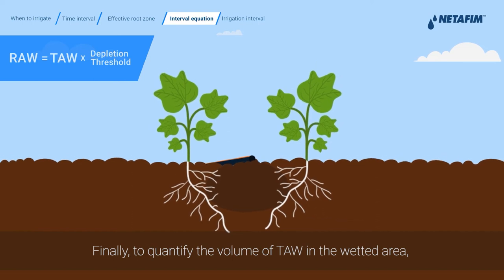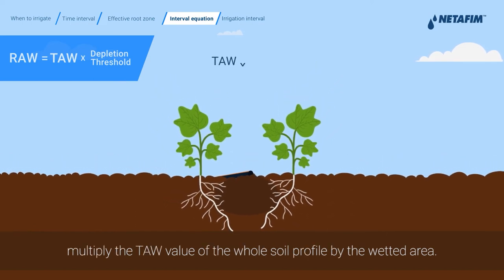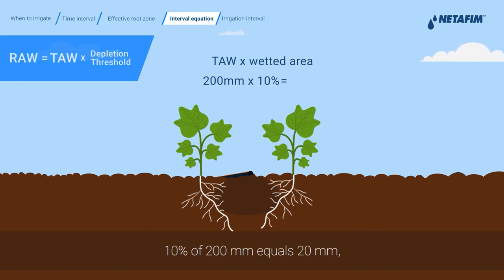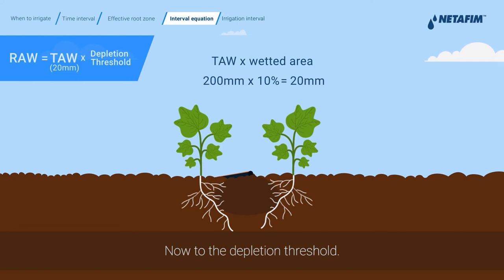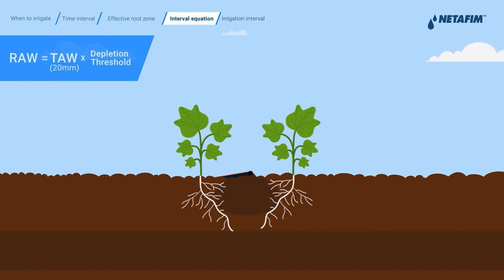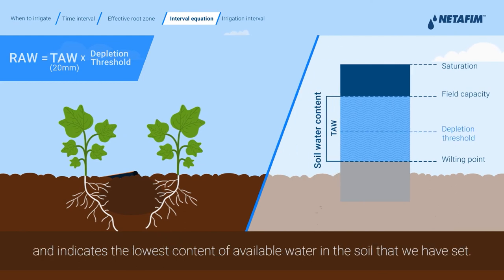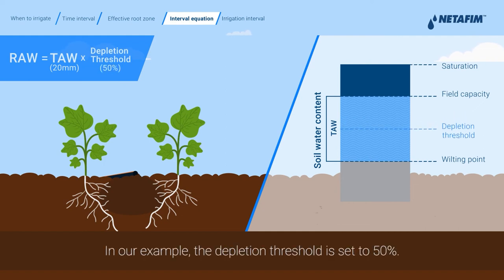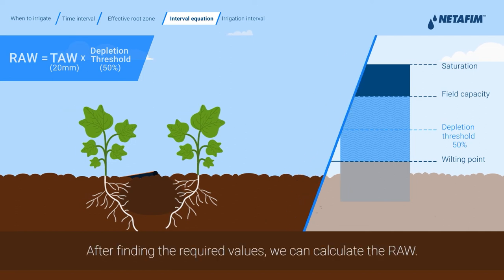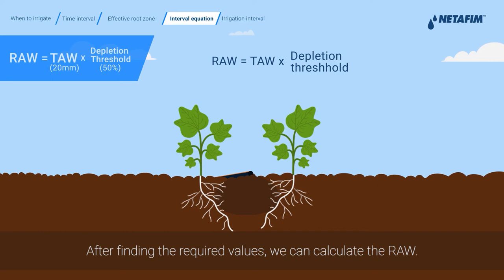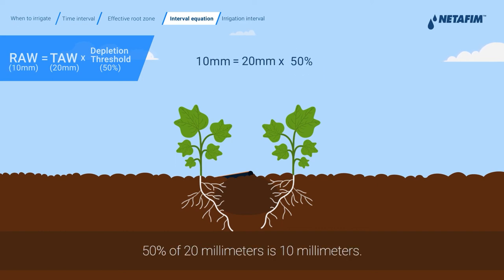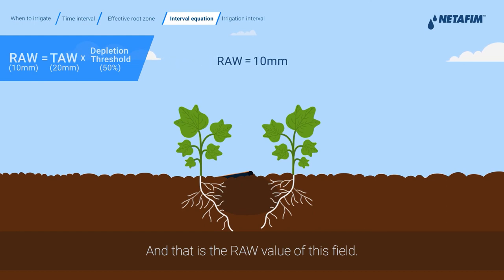Finally, to quantify the volume of TAW in the wetted area, multiply the TAW value of the whole soil profile by the wetted area. 10% of 200 millimeters equals 20 millimeters, giving you the TAW in the wetted area. Now to the depletion threshold — a short reminder: the depletion threshold is within the TAW and indicates the lowest content of available water in the soil that we've set. In our example, the depletion threshold is set to 50%. After finding the required values, we can calculate the RAW: 50% of 20 millimeters is 10 millimeters. That is the RAW value of this field.